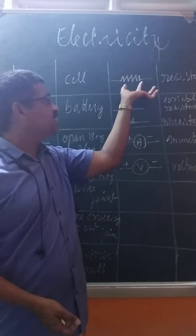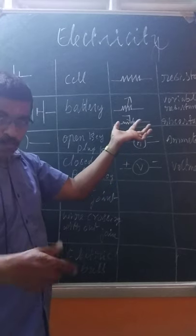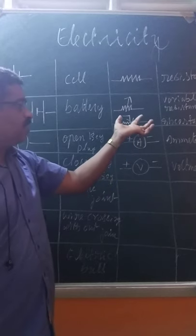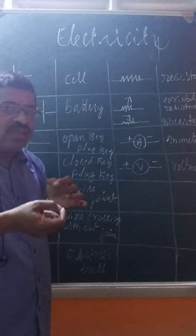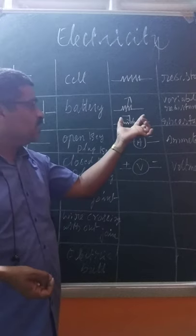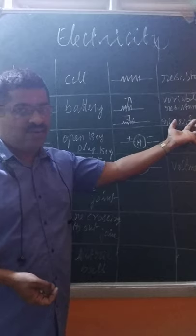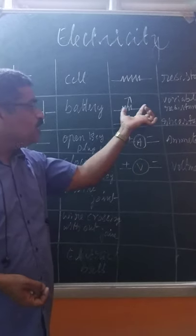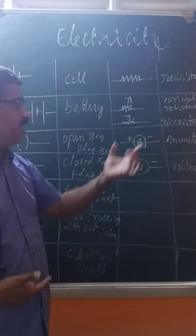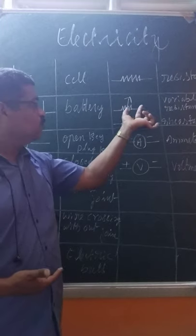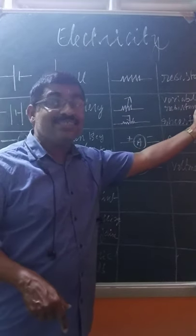This is the symbol used for a resistor. This is the variable resistance. If you have a resistance wire you can use this symbol. This is a rheostat — you can go to the school library and see one. It has more number of resistance wires, so you use this symbol for rheostat and variable resistance.